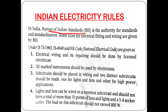Under IS-73, 1963 and IS-4648, we will use these rules. First: electrical wiring and its repairing should be done by a licensed electrician. Wiring into two distinct sub-circuits should be made.